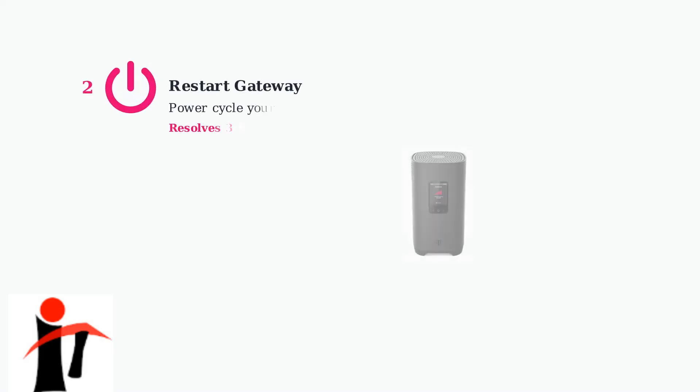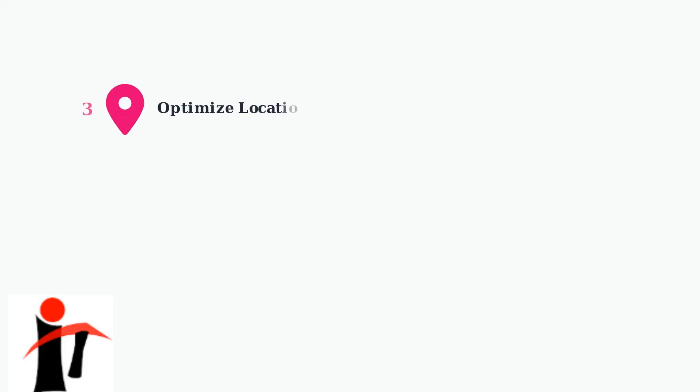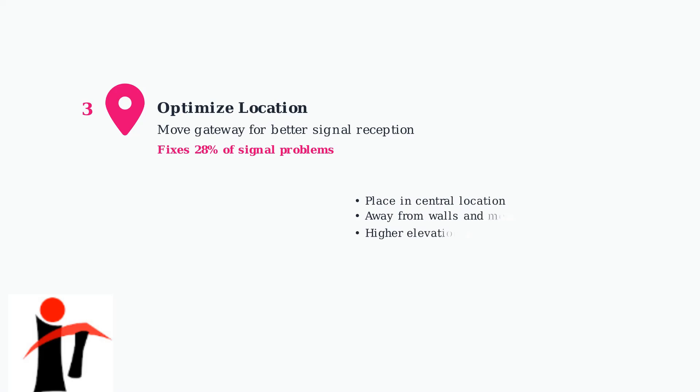Step two is to restart your T-Mobile gateway. Simply power cycle the device by unplugging it for 30 seconds, then plugging it back in. This simple step resolves about 34% of connectivity issues. Third, optimize your gateway's location by moving the device to a central location away from walls and interference sources. Proper placement can fix 28% of signal-related problems.